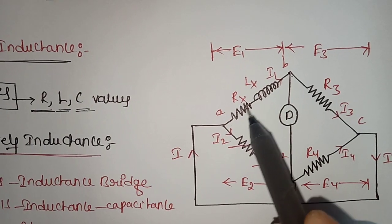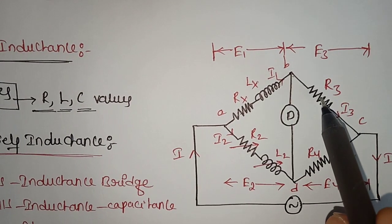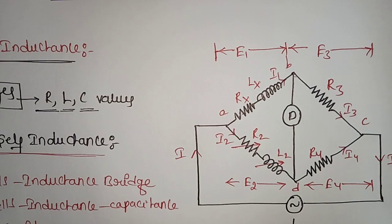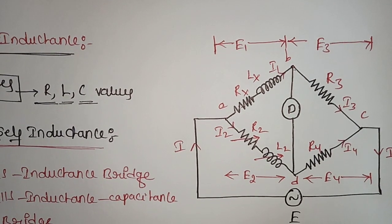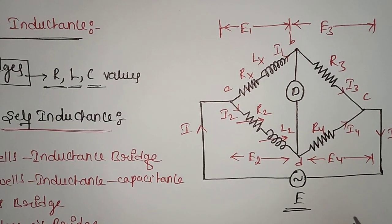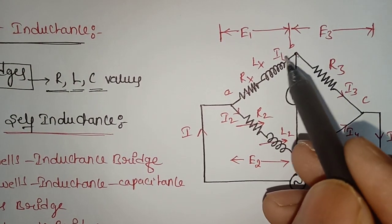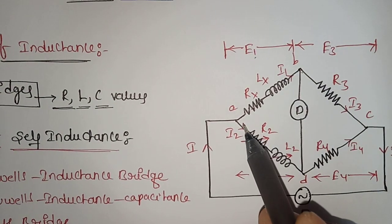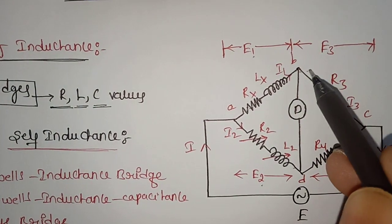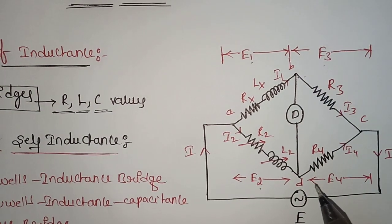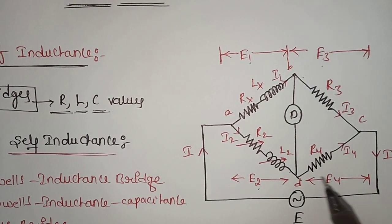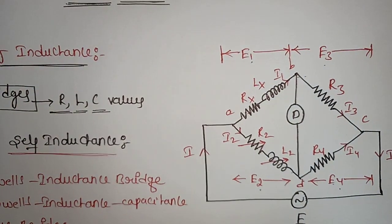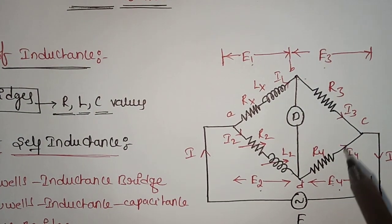Observing the diagram: this is arm 1, this is arm 3, this is arm 4, and this is R4. We apply AC voltage to the circuit. The voltage across the first branch is E1, across the second branch is E2, across the third branch is E3, and across the fourth branch is E4. Now we have to balance the circuit.